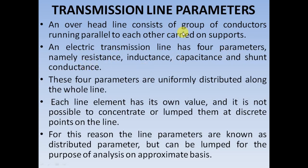Since shunt conductance is caused due to leakage current, its magnitude is so small that it can be neglected. So you are left with only 3 parameters — resistance, inductance, and capacitance — which you have to study in detail. All these parameters are uniformly distributed over the whole length of the conductor; they are not concentrated or lumped at discrete points on the transmission line.